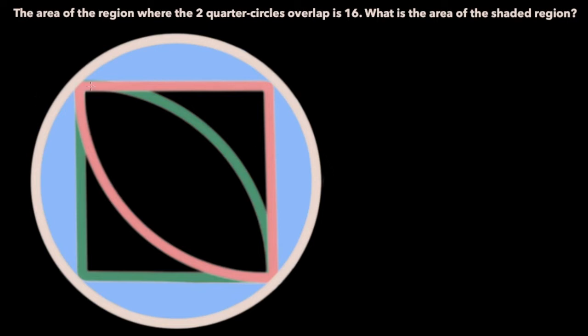To begin, let's assign a variable to the radius of these quarter circles, and for convenience later on, let's say the radius is 2x. Now let's draw a diagonal line that divides the region where the two quarter circles overlap into 2. The problem tells us that the area of this overlapping region is 16, and that means each of the halves must have an area of 8.